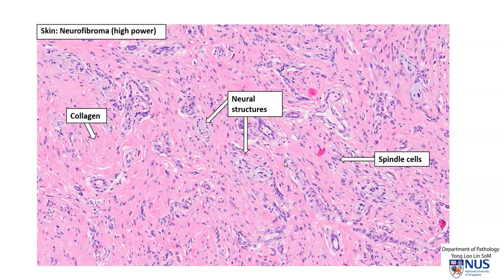This spindle cell proliferation does not show any features of malignancy. In summary, neurofibroma is a benign peripheral nerve sheath tumor that is composed of Schwann cells, fibroblasts, and in-between collagen fibrils. Thank you.